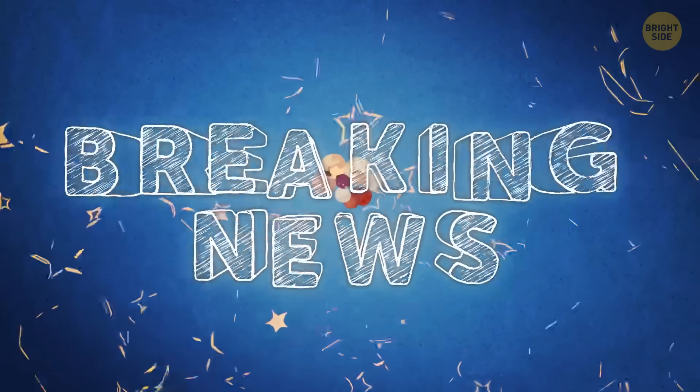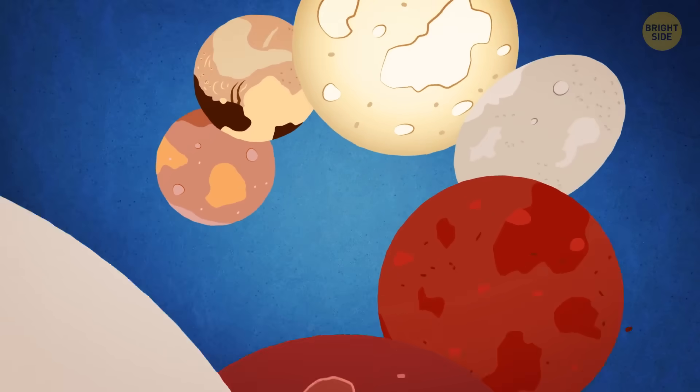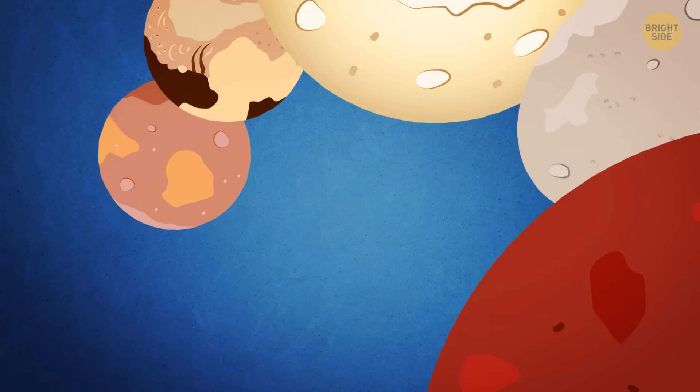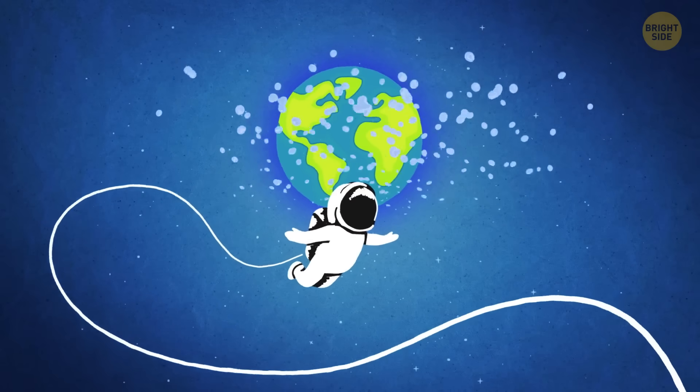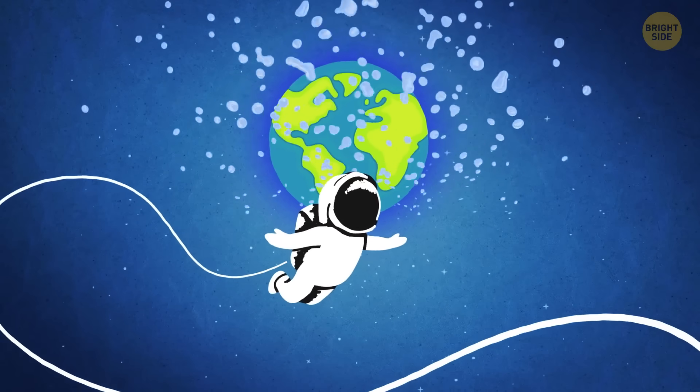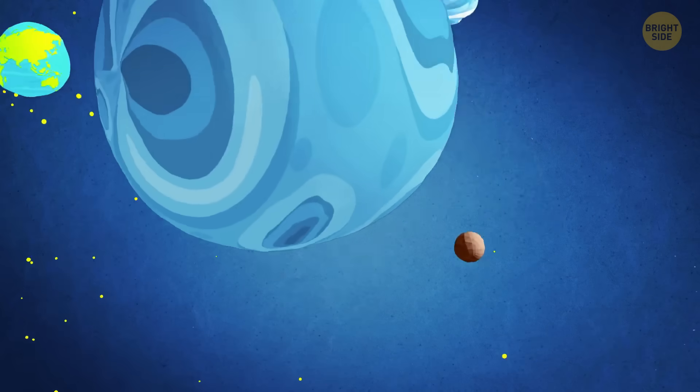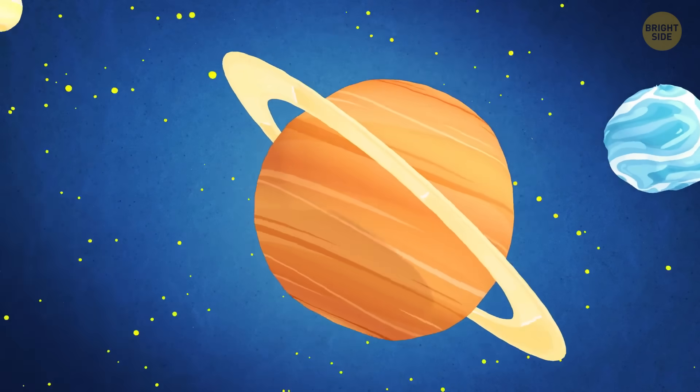Breaking news! Turns out that potentially habitable planets aren't as rare as we thought. Scientists found out that they were wrong about how water appeared on Earth. So let's see what these new discoveries tell us about life in the universe.